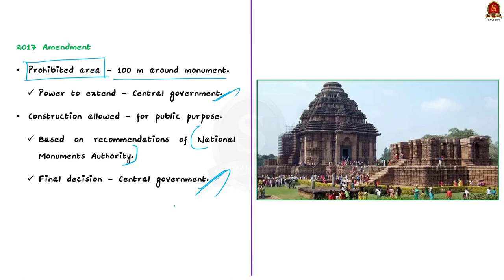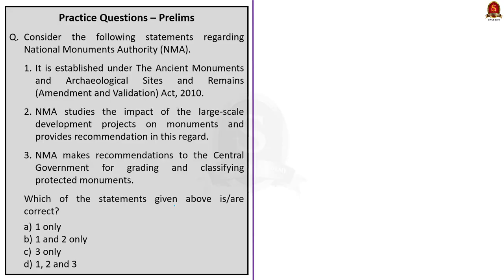There are many criticisms around this amendment. Critics worry that allowing construction for public purposes will further deteriorate protected monuments and lead to more damage — and this may be one reason for increasing encroachments as seen in the news article. Rather than broadly saying 'construction for public purposes,' the central government could define what constitutes a public purpose, which would provide much better clarity. In summary, centrally protected monuments are declared under the 1958 Act, protected by ASI, and enjoy prohibited-area protection within 100 meters under the 2017 amendment.